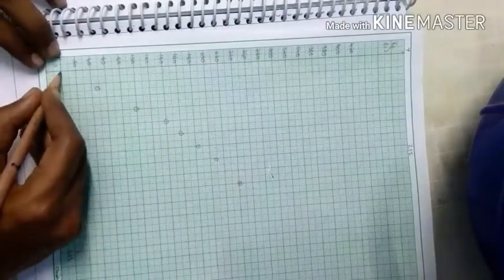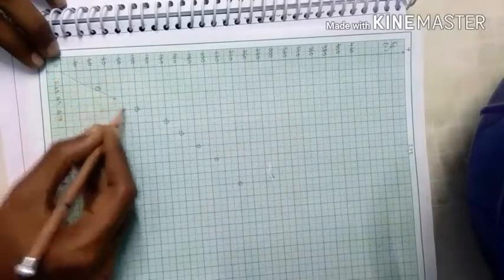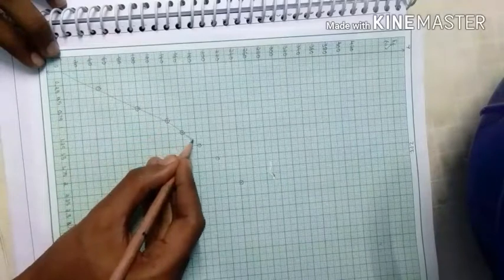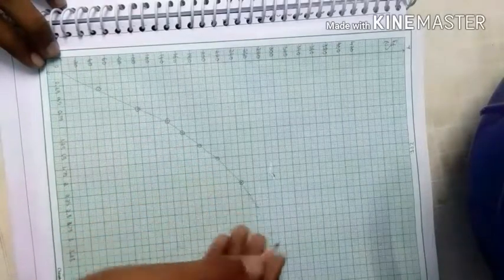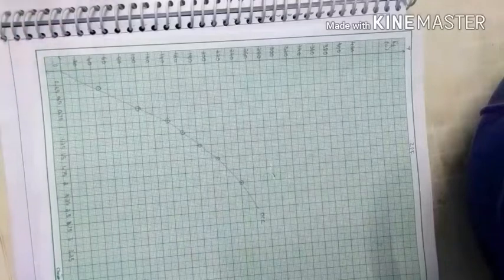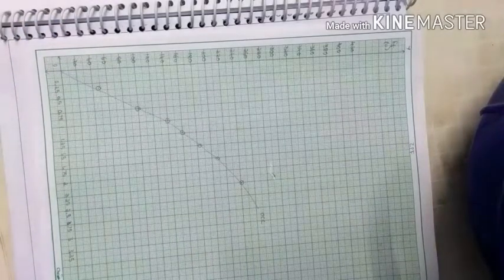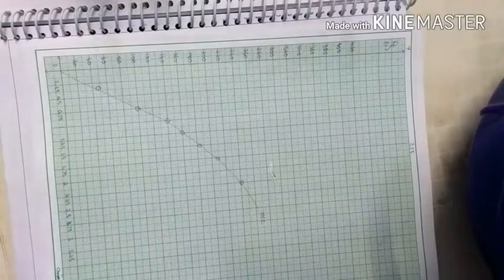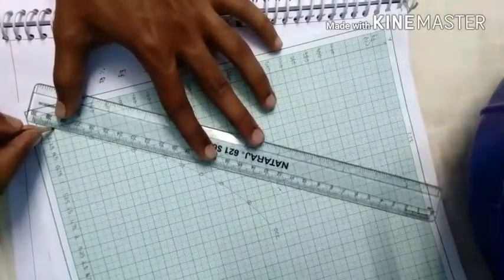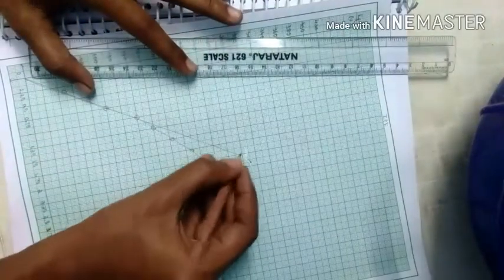Now join all the points. Now draw the air-gap line by extending the first two points straightly. This is the air-gap line.